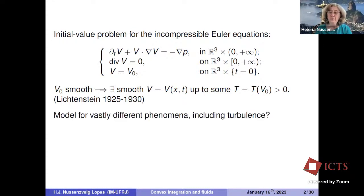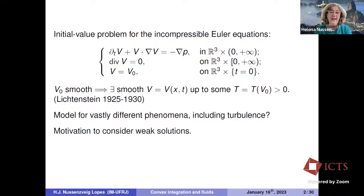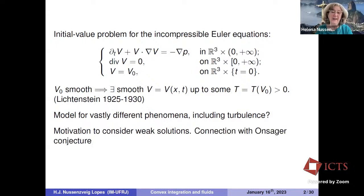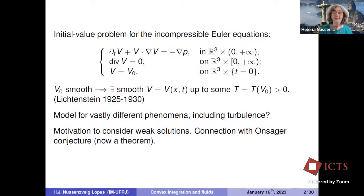The Euler equations are supposed to be a model for vastly different phenomena, including possibly turbulence — that's what we would like. This is enough motivation to consider weak solutions, not only smooth classical solutions but weak solutions of the Euler equations. There's a connection between this and the Onsager conjecture, which I will talk about at the end of my lecture. And by the way, it's now a theorem.